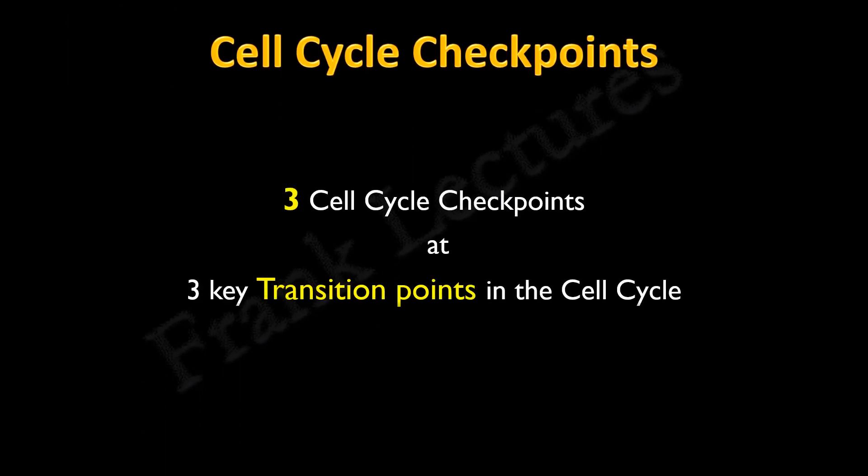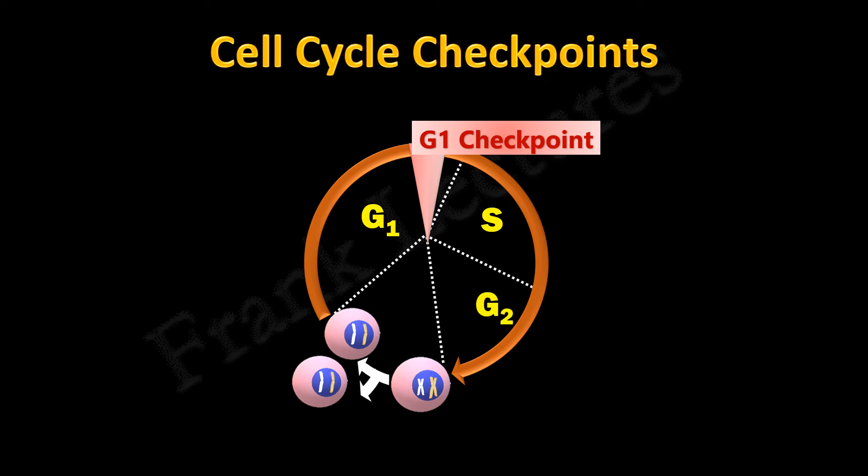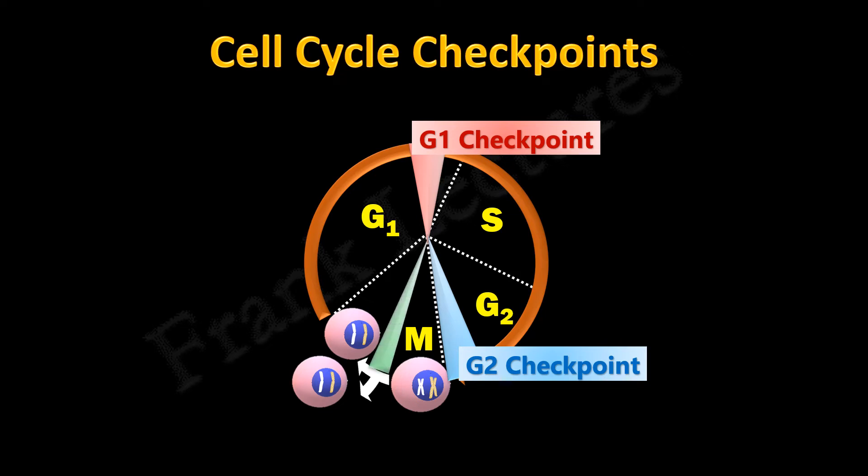There are three cell cycle checkpoints, and these checkpoints are at the three key transition points in the cell cycle. The first checkpoint is at the G1 to S transition and it is known as the G1 checkpoint. The second checkpoint is at the G2 to M transition and it is known as the G2 checkpoint. The third checkpoint is at the metaphase to anaphase transition and it is known as M checkpoint.